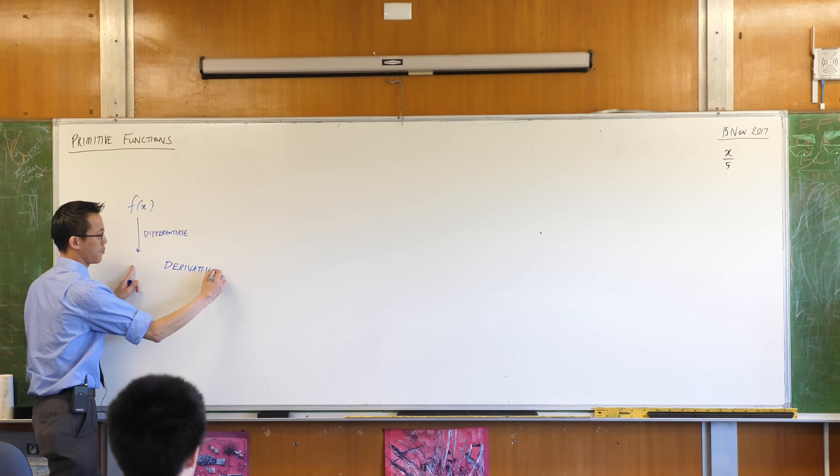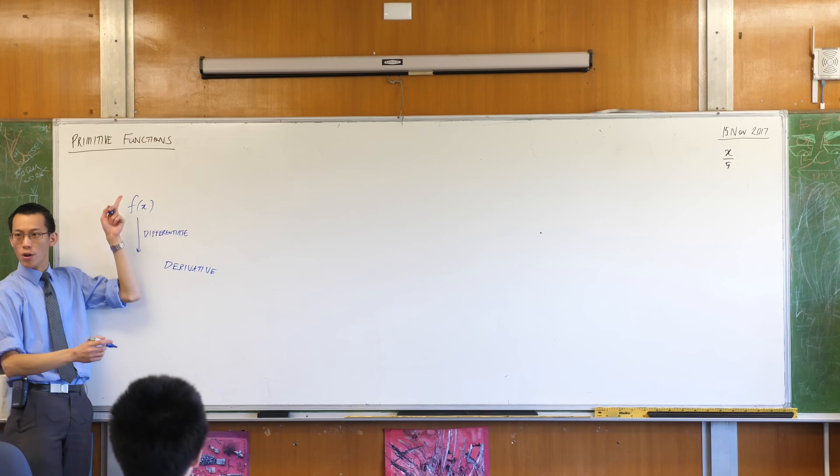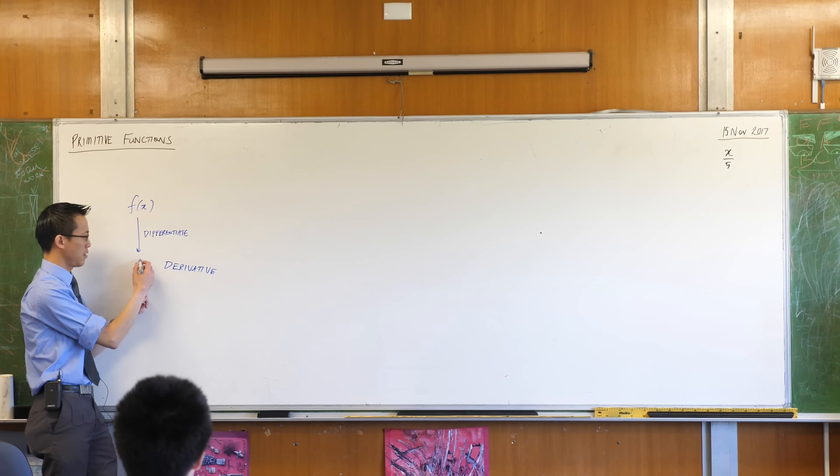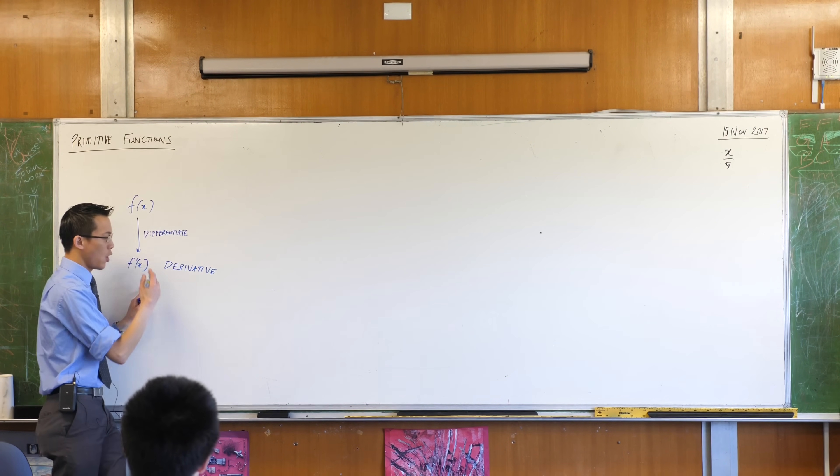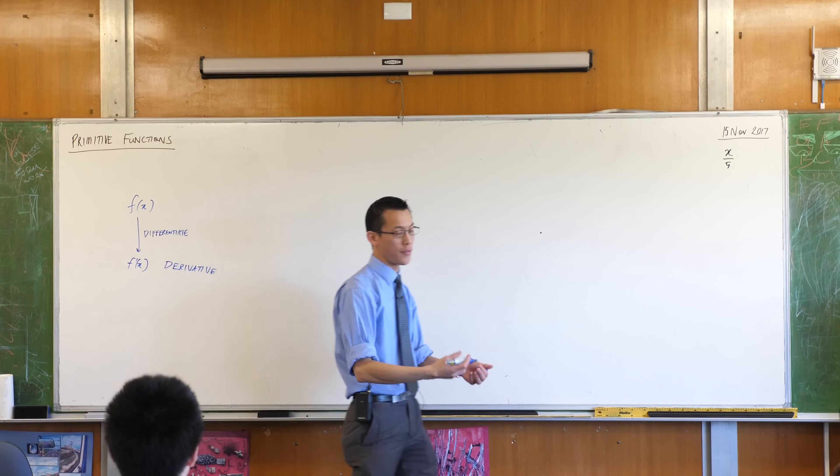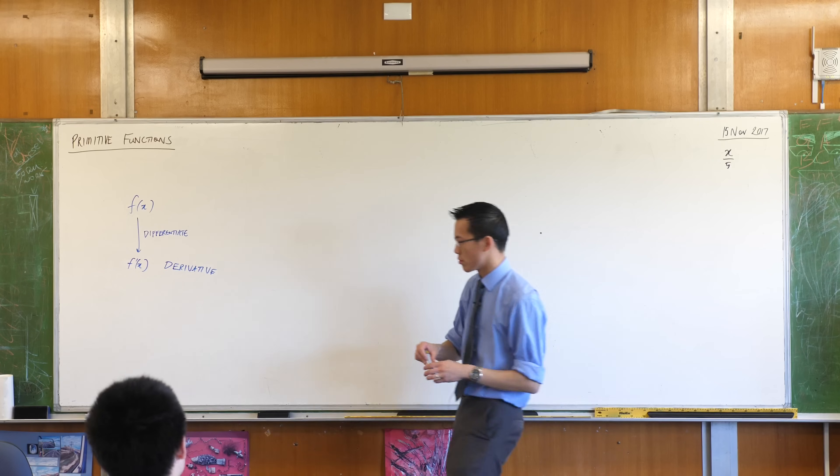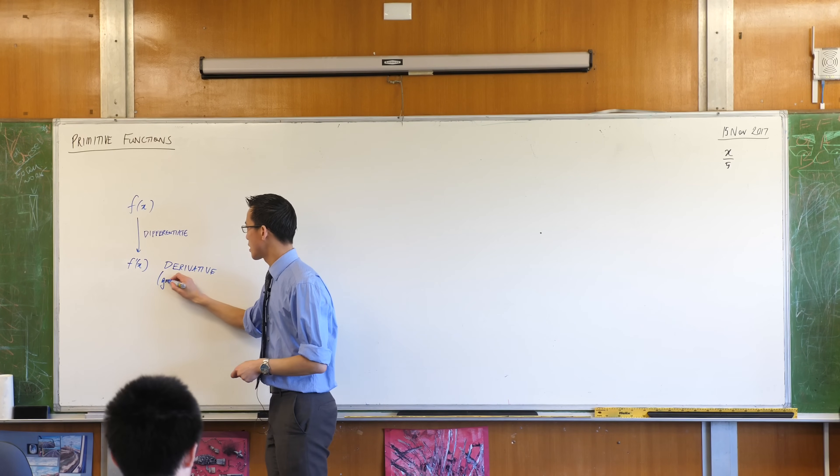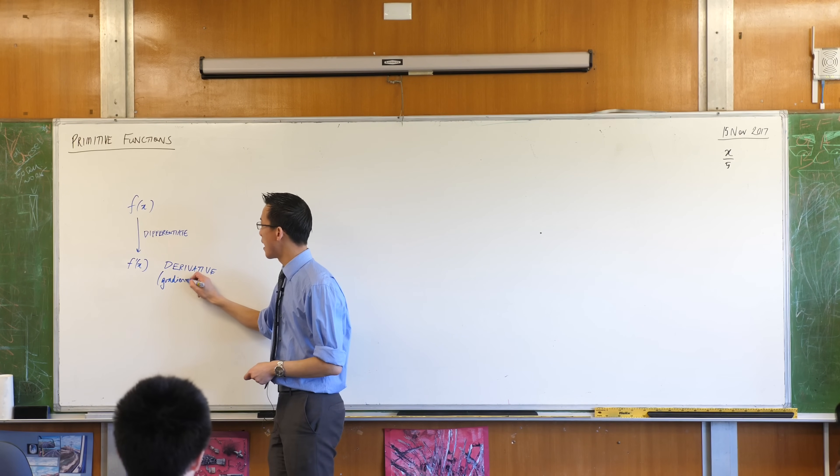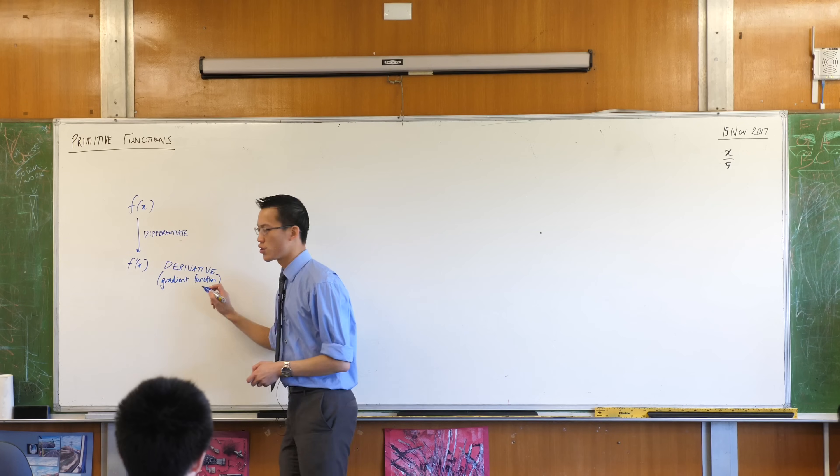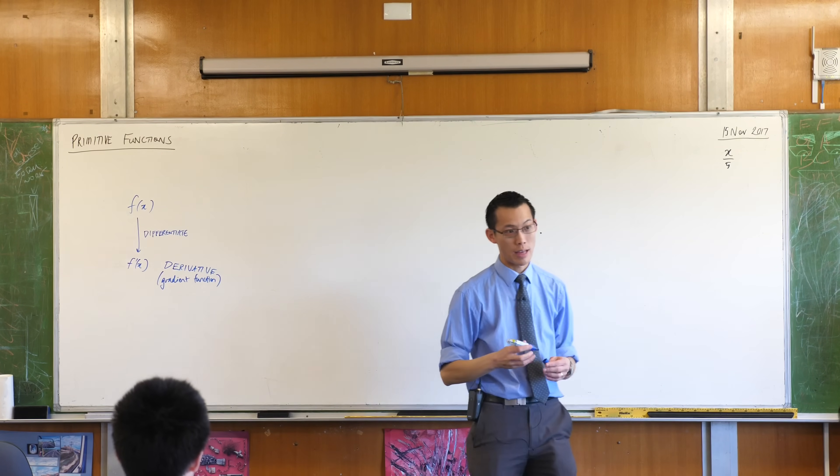We call this the derivative, and in this scheme, we would notate it as f dash. We call it the derivative because it comes from the function that you're interested in. Derivatives, or the gradient function, they tell us something about the original function and how it behaves or how it looks like.